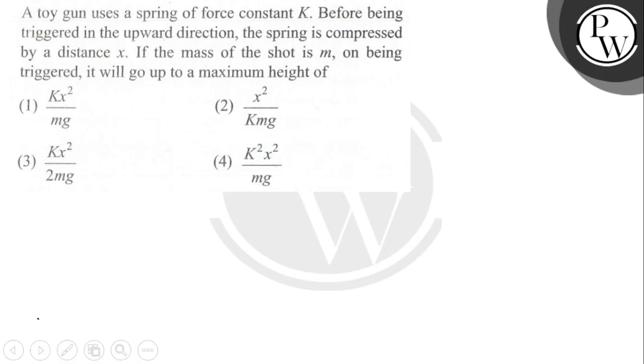Bachon yahaan per spring me energy stored hoi. Yahaan per shot ke yahaan per gravitational potential voltage aajhi badhaan ke kaam karayegi. To spring me kitni energy stored hoi? Yahaan per kx² equal to mgh. To hummare paas yahaan per h ki value ayegi kx² upon 2mg.